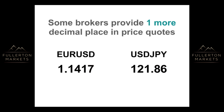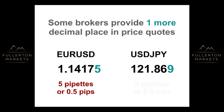Some brokers provide one more decimal place in price quotes. This is known as a PIPET. In the above example, 1.14175 represents 5 PIPets or 0.5 PIPs. In the USDJPY example, this is equivalent to 9 PIPets or 0.9 PIPs.